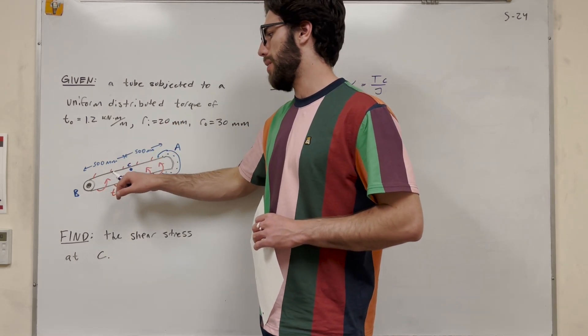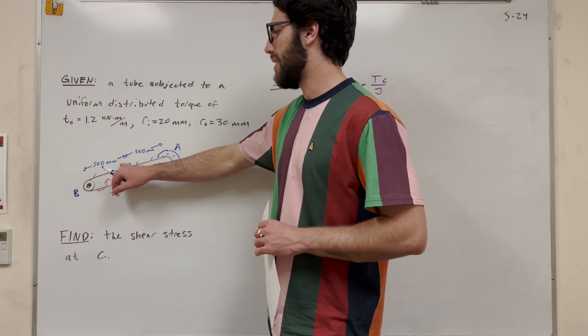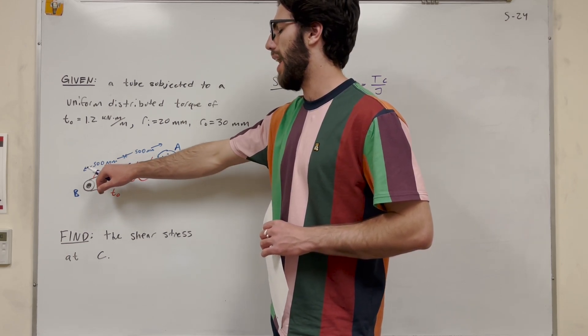And then the attributed torque is going to get bigger and bigger as you get further down the rod. So if you want to find what it's going to be, we're going to take zero and then we're going to add it to basically how much torque is applied over that half a meter distance.